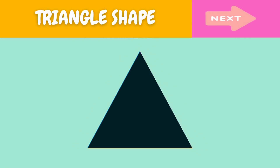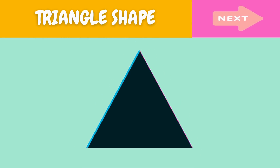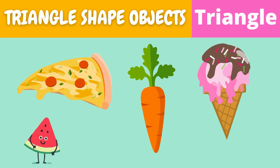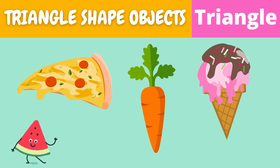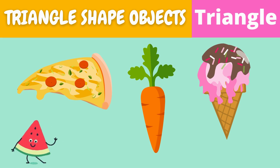This is a triangle. What is this? This is a triangle. Here are some examples of triangle shaped objects.